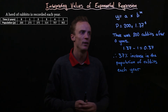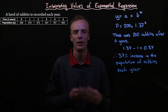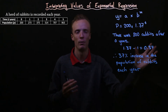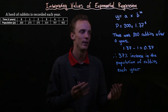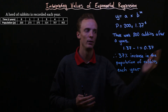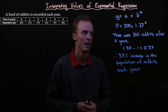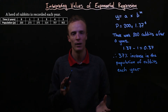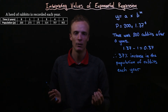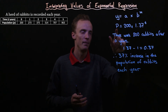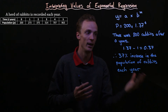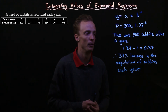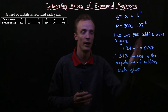To summarize: our a value represents the initial starting value — in this case the initial population of rabbits was 200. Our b value represents the percentage increase or decrease of our response variable for every one unit change of our explanatory variable, which in this case is years.